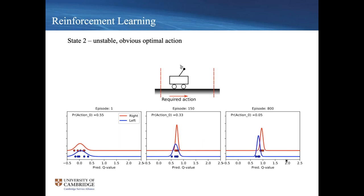The second state is an unstable state with an obvious optimal action — clearly you'd want to move right in this situation. At episode one the distributions are similar and overlapping. After training to episode 800 they again become peaked, and importantly there's a definite separation between the two: the agent has learned to be very confident that moving right is the correct action in this situation.